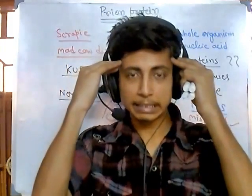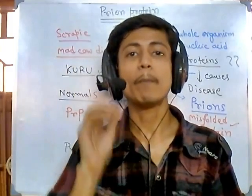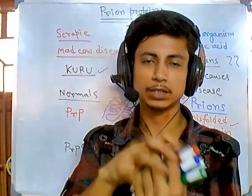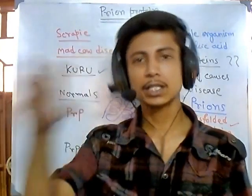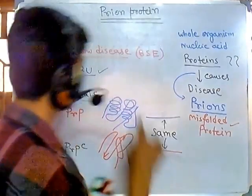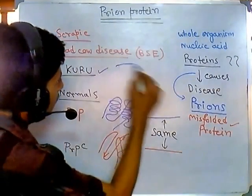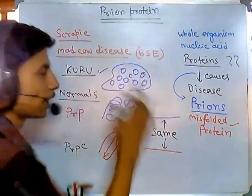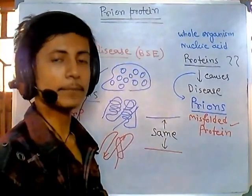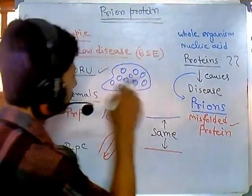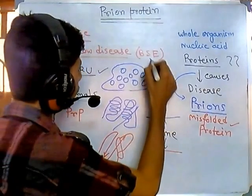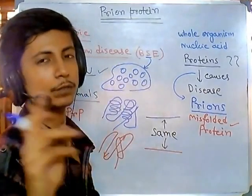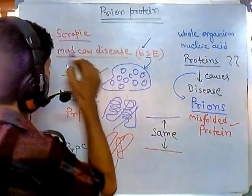As cells start to die in our brain, specialized cells called microglial cells patrol throughout our brain. Wherever they find bad nerve cells or damaged cells, they scavenge and eat those damaged nerve cells. As a result, if you look at brain tissue from a BSE-affected or kuru-affected individual, you find different plaques and pores — because the nerve cells in those regions have already been digested by the microglial cells. This is why it looks like a sponge with many holes, and that's why it's called bovine spongiform encephalopathy.